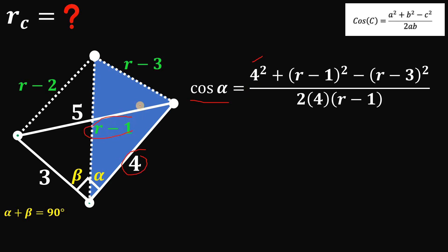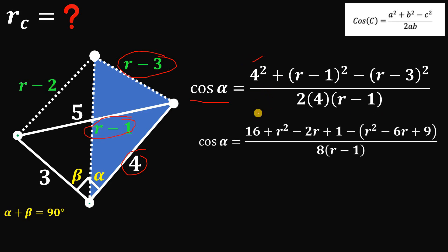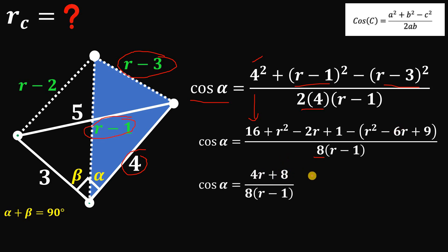Applying the law of cosines to this triangle, cosine of alpha equals 4 squared plus (R minus 1) squared minus (R minus 3) squared, all over 2 times 4 times (R minus 1). Simplifying the numerator gives 4R plus 8. So cosine alpha equals (R plus 2) all over 2 times (R minus 1). We will use this result later.